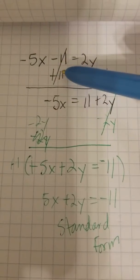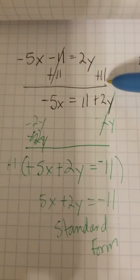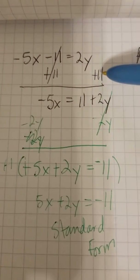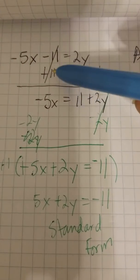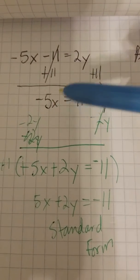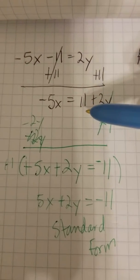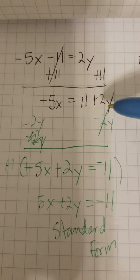All right, so what we did was we added 11 to both sides. And then we canceled out the 11s and we're left with negative 5X equals 11 plus 2Y.